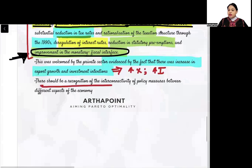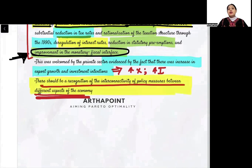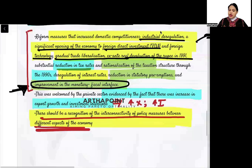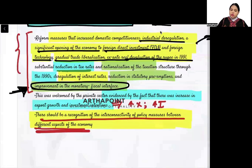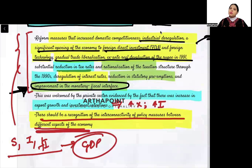Professor Rakesh Mohan points out that there should be recognition of the interconnectivity of policy measures between different aspects of the economy. We need to understand that all policy measures are interrelated to different aspects of the economy. Any policy you bring will affect savings, investment, foreign investment, and GDP — everything is interrelated.